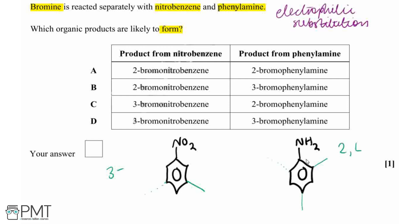So we're going to be looking for the line in the table which shows the correct substitution. For our nitrobenzene, we need 3-bromonitrobenzene, and with our phenylamine, we're looking for 2-bromophenylamine. So overall, our answer is going to be C.